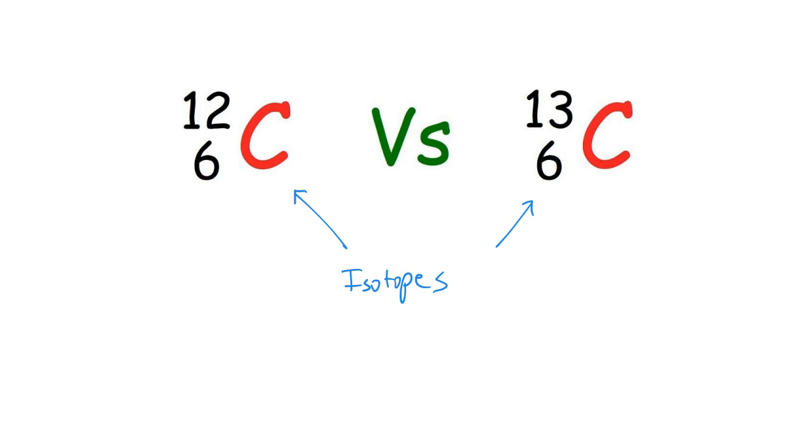Now carbon 12 is slightly more stable than carbon 13. Carbon 13 will eventually decay into carbon 12 but they both do exist. Carbon 12 is much more common but carbon 13 exists in nature as well.